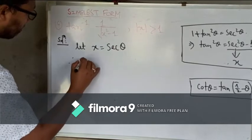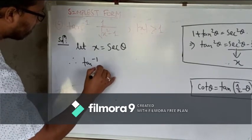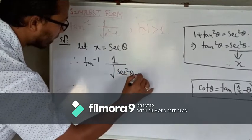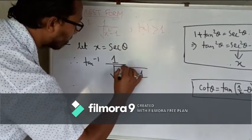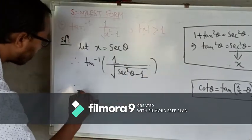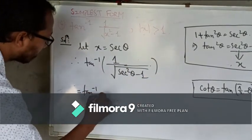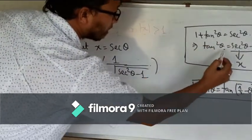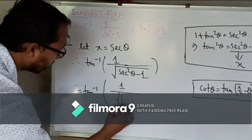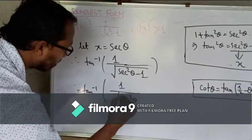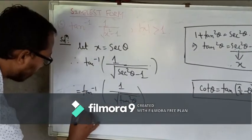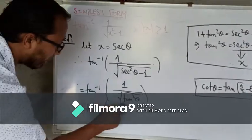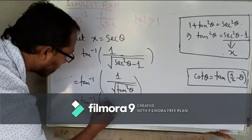Then tan inverse of root of x squared minus 1 will be tan inverse of root of tan squared theta minus 1, which equals tan inverse of root of tan squared theta. So 1 by tan squared theta means tan theta, so 1 by tan theta means cot theta.